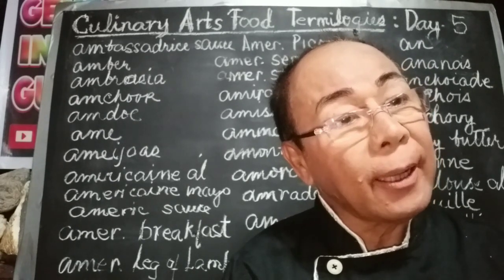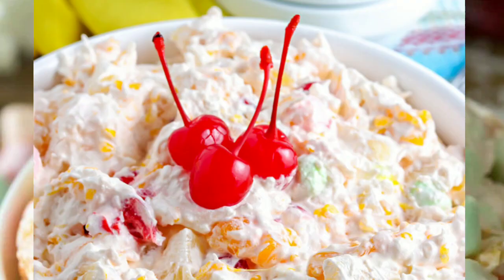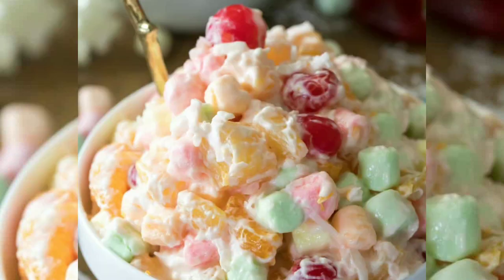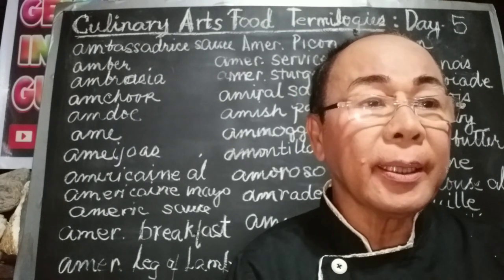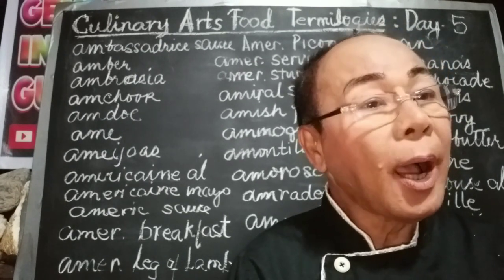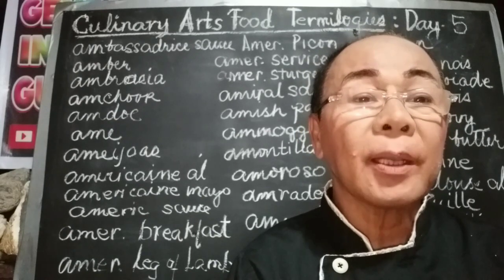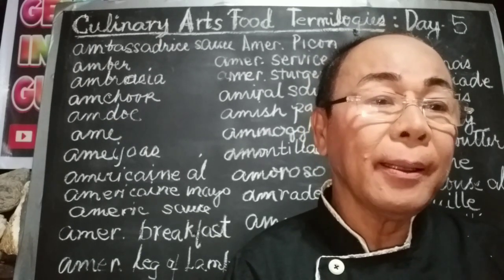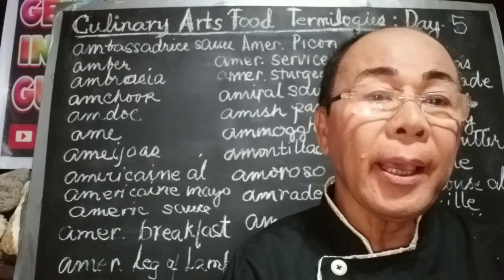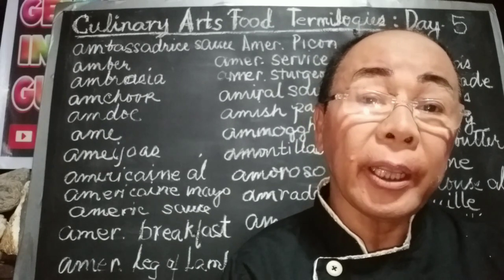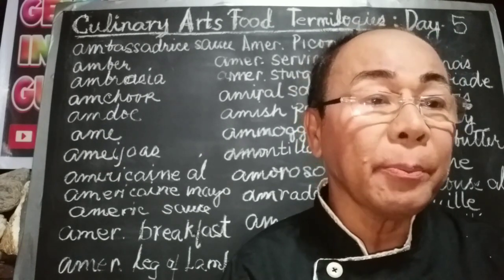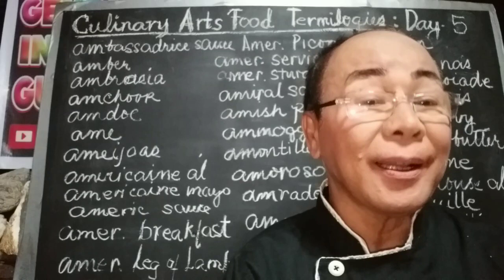Ambrosia is a 19th-century salad or dessert made of fresh grated coconut and fresh fruit, especially oranges, popular in the American South. Ambrosia also refers to a cocktail made of lemon juice, brandy, apple cider, and sparkling wine, and in Greek and Roman mythology it refers to the food of the gods.